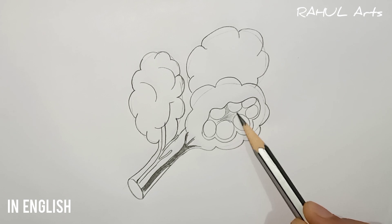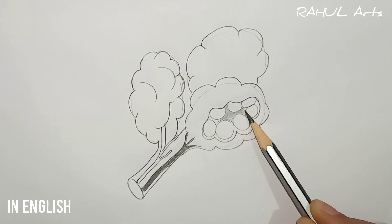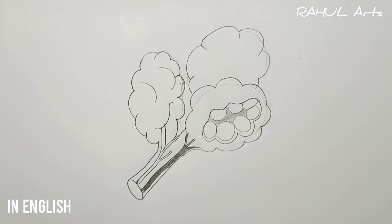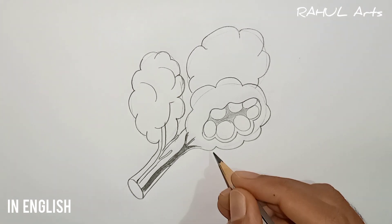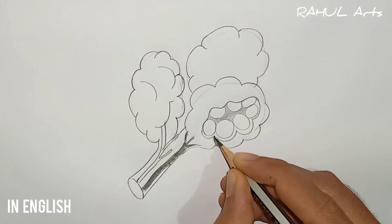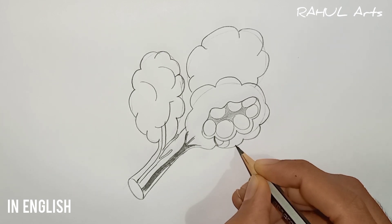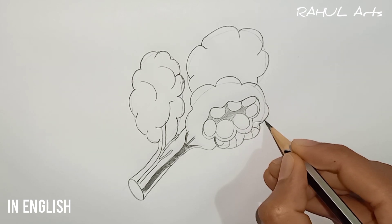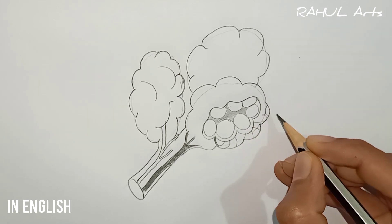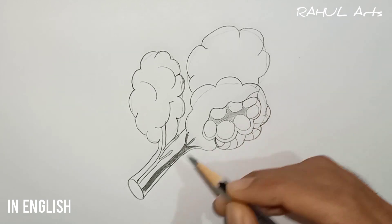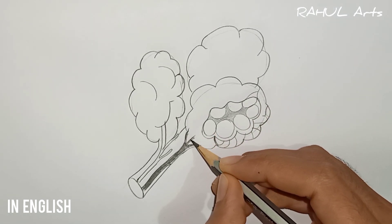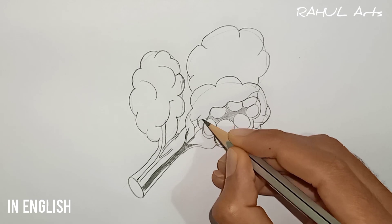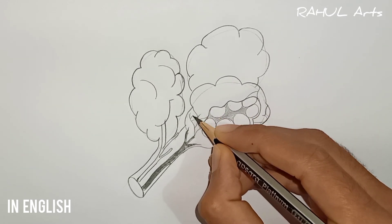Now there are some spaces left between those alveoli — highlight them, as they are the atrium part. After highlighting that part, draw these web-like structures as you can see on the screen. These are the capillary beds.